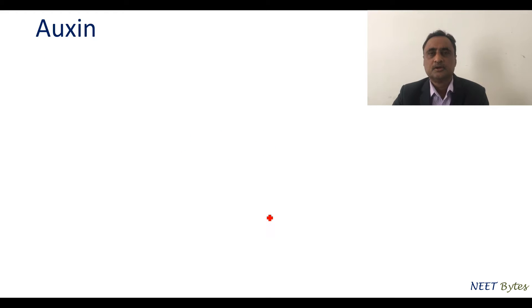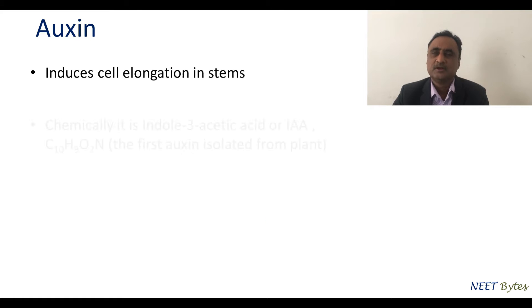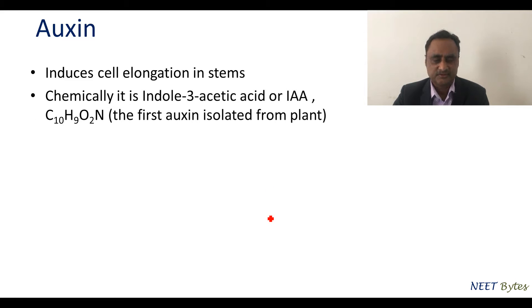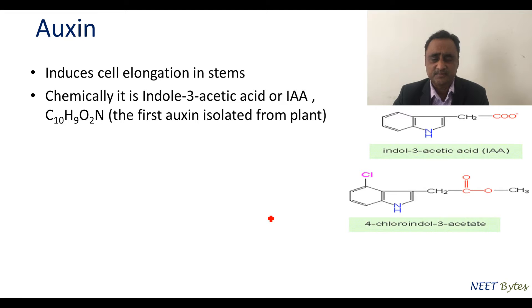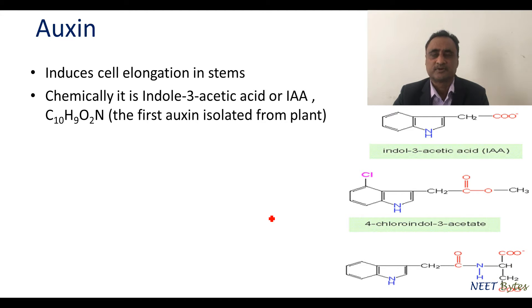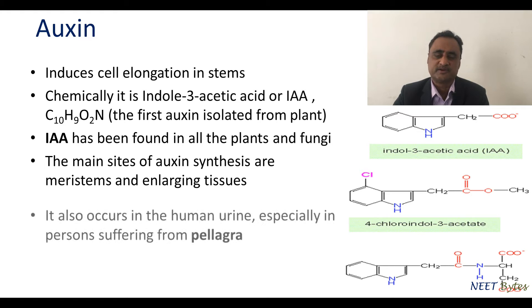In this session, presented by Dr. Pankaj Kumar, we will be talking about auxin and its general features. Auxin is primarily known for the growth or elongation of the stem. Chemically it is indole-3-acetic acid, and there are different variants of indole-3-acetic acid.